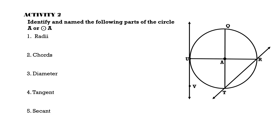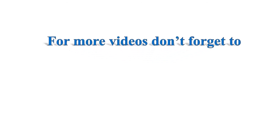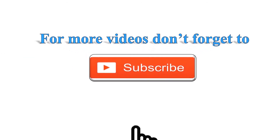Now we can try Activity Two. The instruction is to identify and name the following parts of circle A. You can pause the video if you'd like, as the answers will be shown at the end of this video. For more videos on mathematics, please don't forget to subscribe.